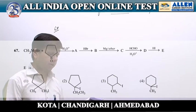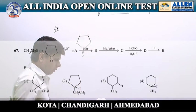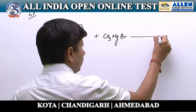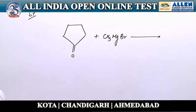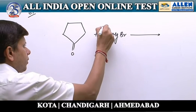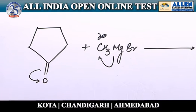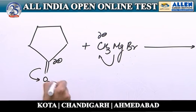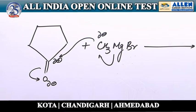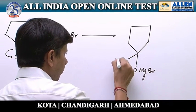Question 67: a sequence of reactions starting from cyclopentanone. First, cyclopentanone is reacted with methyl magnesium bromide followed by hydrolysis. This is a nucleophilic addition reaction where the CH₃⁻ part of the Grignard reagent attacks the electron-deficient carbonyl carbon of cyclopentanone, giving an addition product.